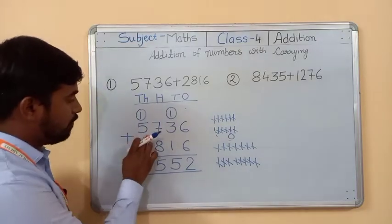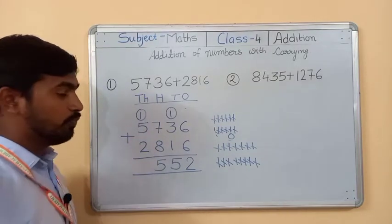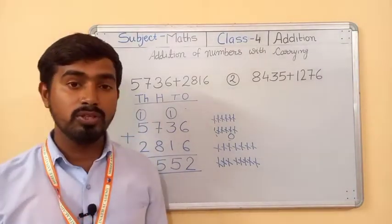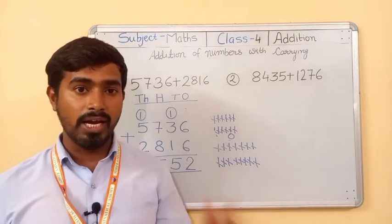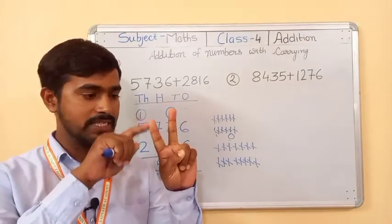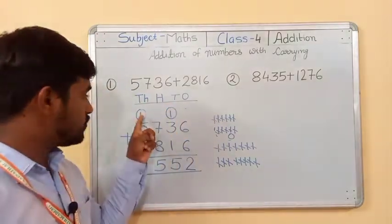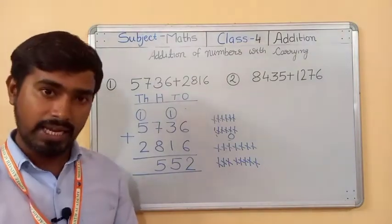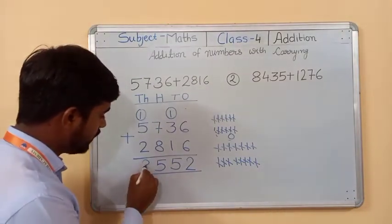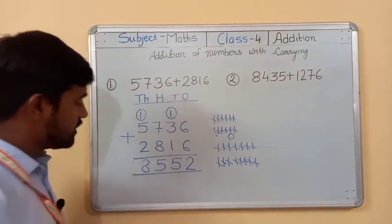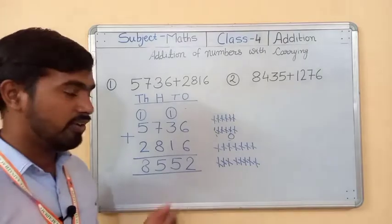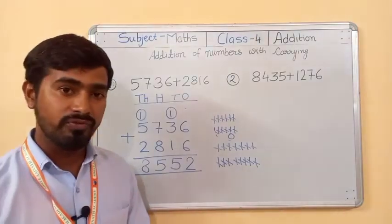Now five plus two: keep five in your mind and add two — five, six, seven. Seven plus one carry equals eight. Write eight here. So your answer is 8,552.